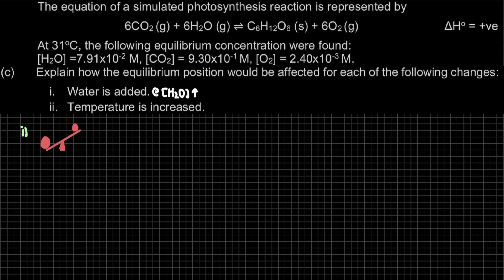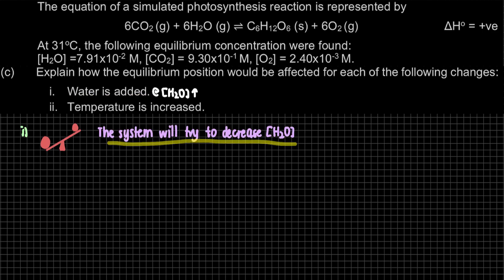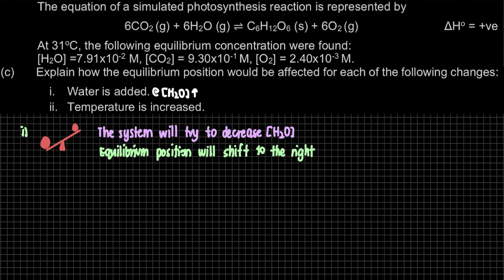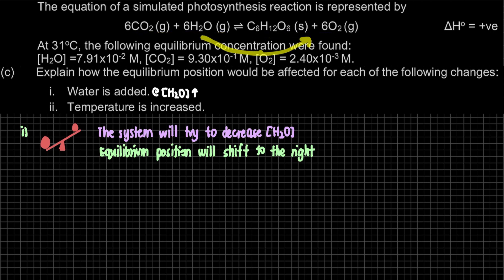To answer an 'explain' question, first mention the counter-response: the system will try to decrease the H₂O concentration. Then state the equilibrium position: to rebalance, it shifts to the right. When the equilibrium shifts to the right, CO₂ and H₂O are consumed to form more O₂ and glucose, so the concentrations of CO₂ and H₂O decrease.